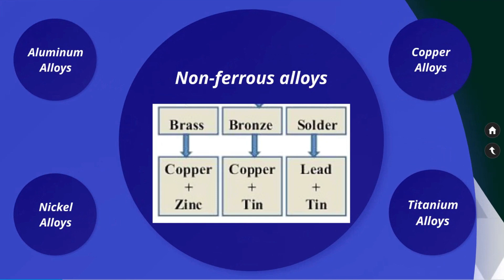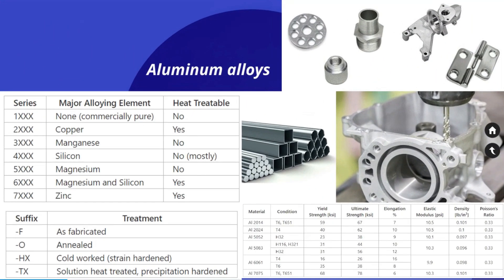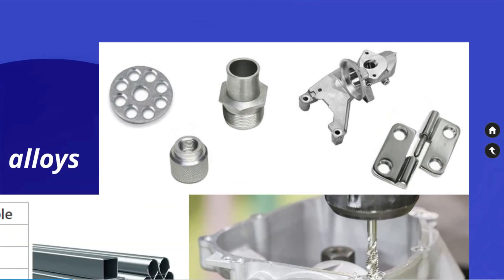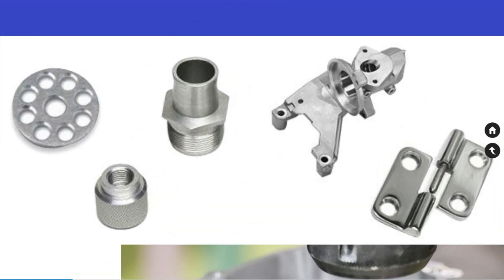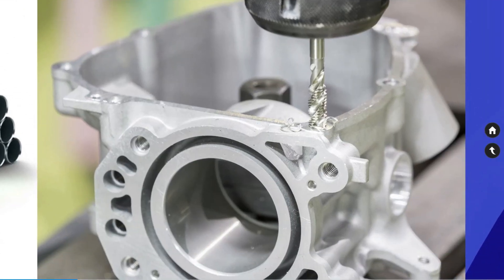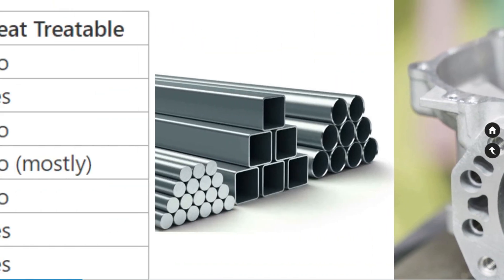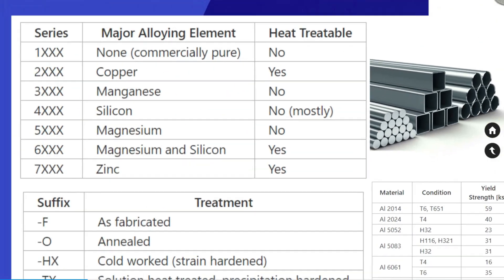Non-ferrous alloys are combinations of pure metals other than iron. Let us see some examples. Aluminium alloys: pure aluminium is soft and weak, but it can be alloyed to increase the strength. Pure aluminium has good corrosion resistance due to the oxide coating that forms over the metal and prevents oxidation. The table represents the mechanical properties of several common aluminium alloys.